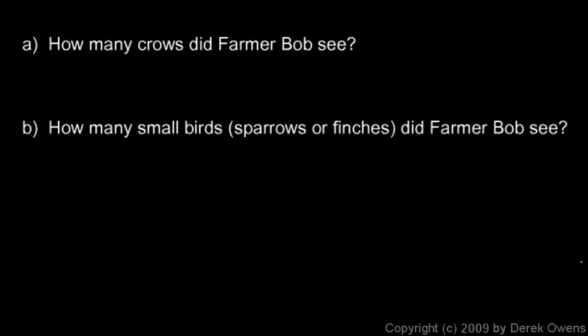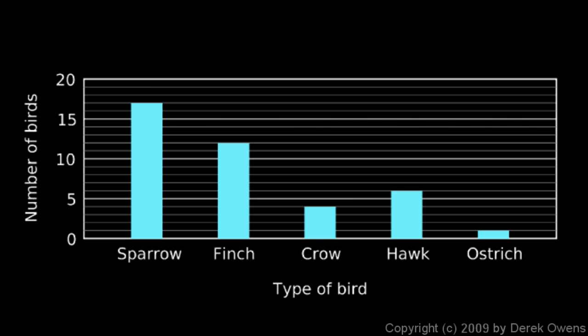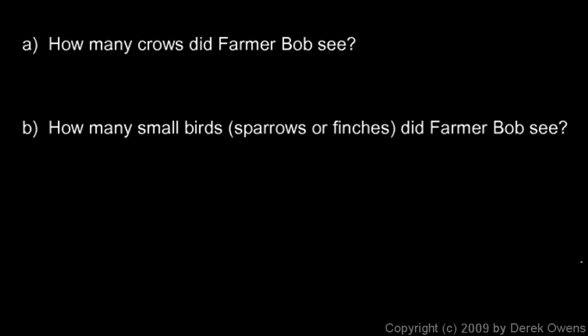We're asked: how many crows did farmer Bob see? Looking at the chart, the crow bar sits one below the 5 line, so he saw four crows. We can answer that question pretty easily — the answer is four.